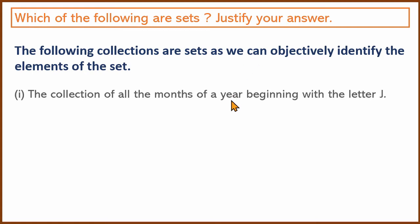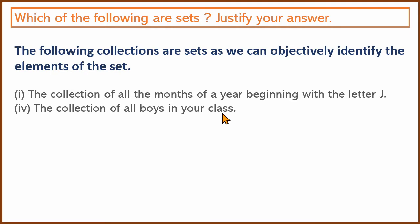For example, the collection of all the months of a year beginning with the letter J — the answer will be the same: January, June, and July begin with J. It doesn't matter whether you ask person A or person B; the answer is always the same. Similarly, the collection of all boys in your class is objectively the same no matter who we ask.